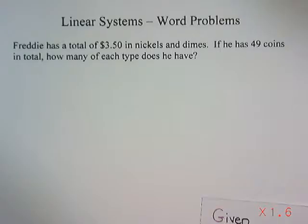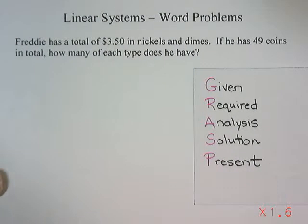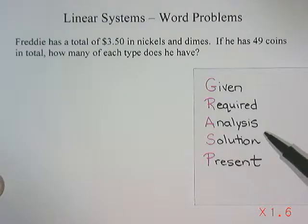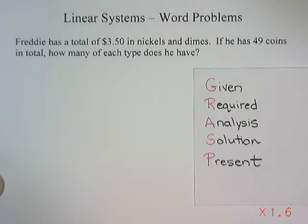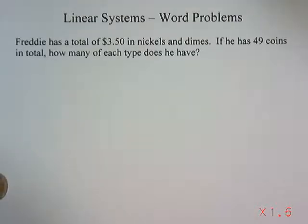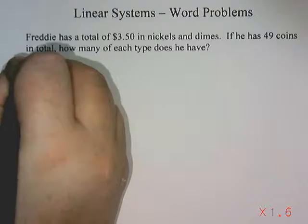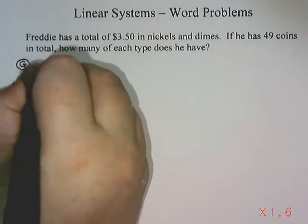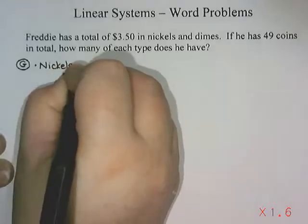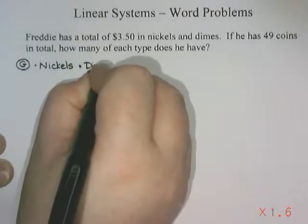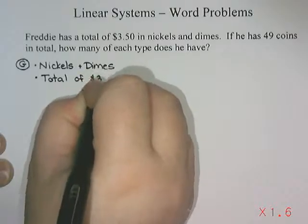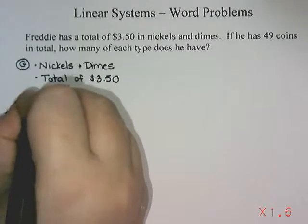We're going to approach this question using the GRASP solving method, breaking it down into what was given, what's required, analysis where we make a plan, the actual solution, and then presenting our answer in a sentence. Starting with G — what's given: he has nickels and dimes, a total of three dollars and fifty cents, and a total of 49 coins.